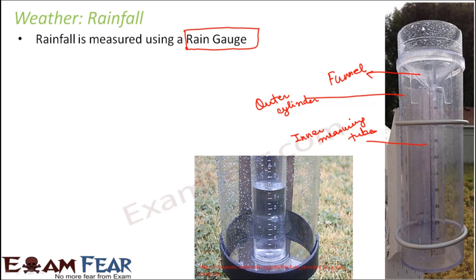Now how do we measure rain? When it rains, the upper part is open so the funnel collects the rainfall and the rain gets collected in the inner cylinder. The funnel is linked to the inner measuring tube, and the inner measuring tube is graduated with values so it can measure how much water is coming in. This tube can measure up to 25 mm of rainfall. Now if it is raining very heavily, the inner tube will get immediately filled up — so any excess amount of rain is captured in the outer cylinder, and that is why we have a bigger outer cylinder.